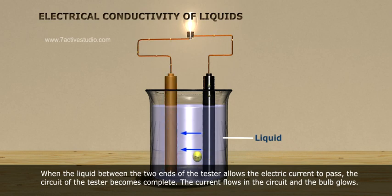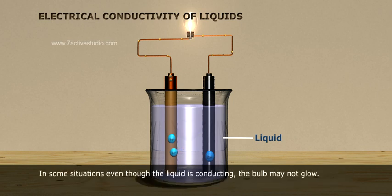the circuit of the tester becomes complete. The current flows in the circuit and the bulb glows.